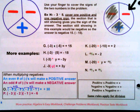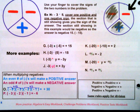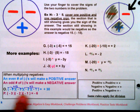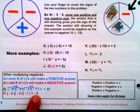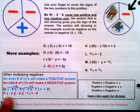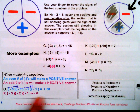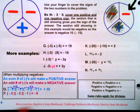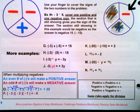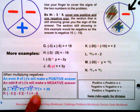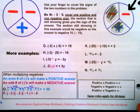An odd number of negatives will make a negative answer. With three negatives, for example, the result is negative 6. Whether you have 3, 5, 7, 9, or any odd number of negatives being multiplied together, you will always end up with a negative answer.